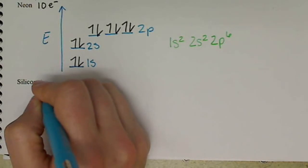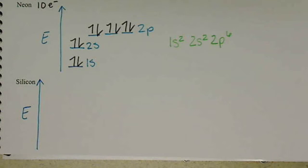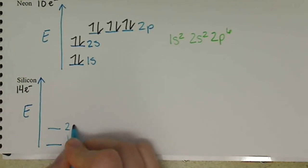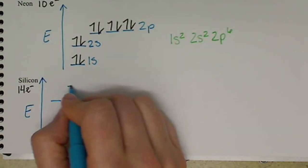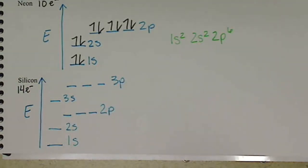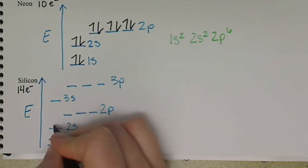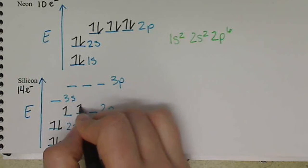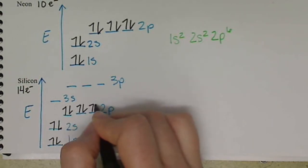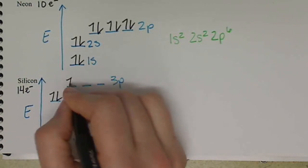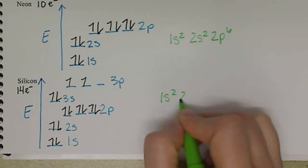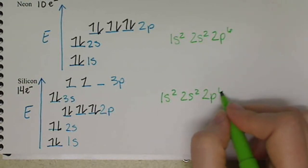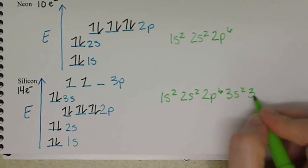Silicon. Silicon has 14 electrons. So I have 1s, 2s, 2p, 3s, 3p. 14 electrons. So we go 1, 2, 3, 4, 5, 6, 7, 8, 9, 10, 11, 12, 13, 14. So we have 1s2, 2s2, 2p6, 3s2, 3p2.